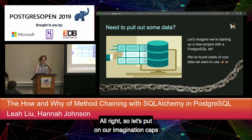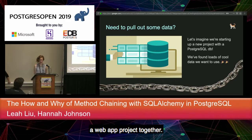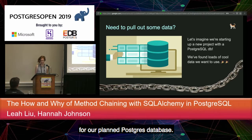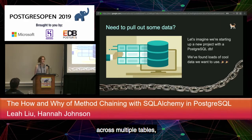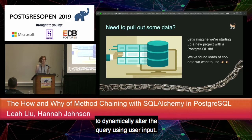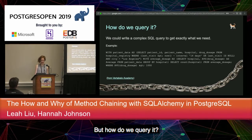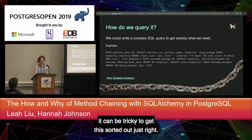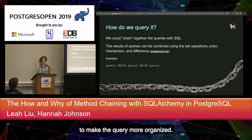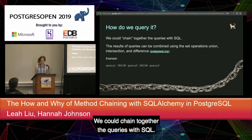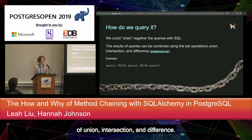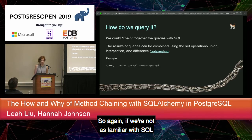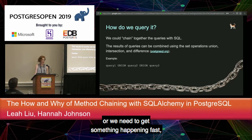Let's put on our imagination caps and imagine we're starting up a web project together. We've got loads of data for our planned Postgres database. We need to seed the data, query it, filter by related data points across multiple tables, and dynamically alter queries using user input. We could write a complex SQL query, but for those less familiar with raw SQL, it can be tricky. We could also chain queries together with SQL using union, intersection, and difference — but again, if we're not familiar with SQL or need something fast, this can be difficult.